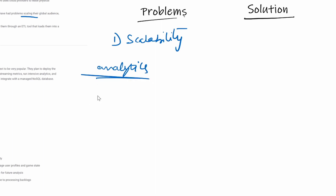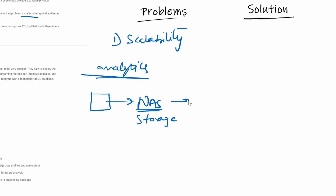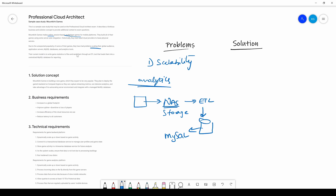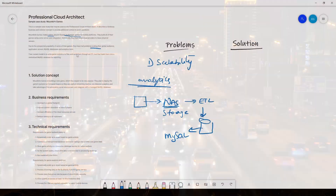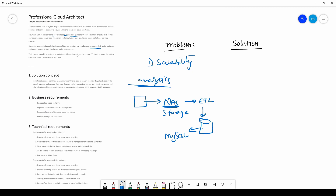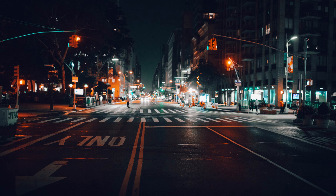The current analytics model works like this: game server files are transferred to disk storage — a SAN or NAS drive — then from there they do ETL processing, and the data goes into a MySQL database. That's the current ETL solution. One of the main problems in the gaming industry is that a popular game requires rapid scaling. Mountkirk Games is experiencing these scaling issues. If the game is not popular, you don't want to over-provision your servers because you end up paying more.